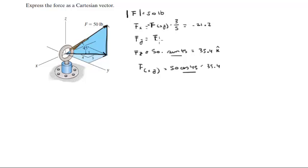The Y component is the projection times 4/5. It's positive because it's going towards the positive Y axis, and it comes out to be 28.3.